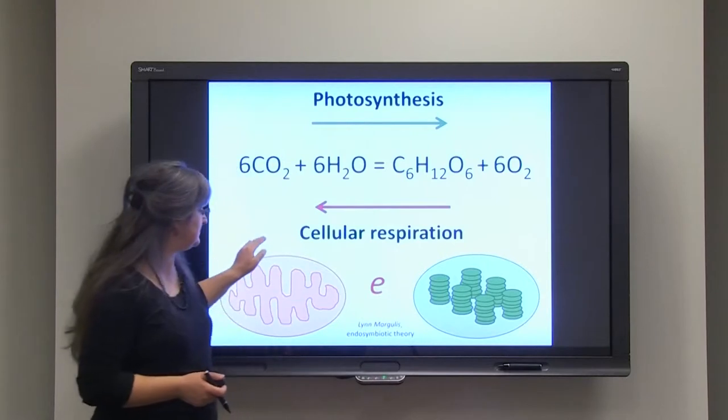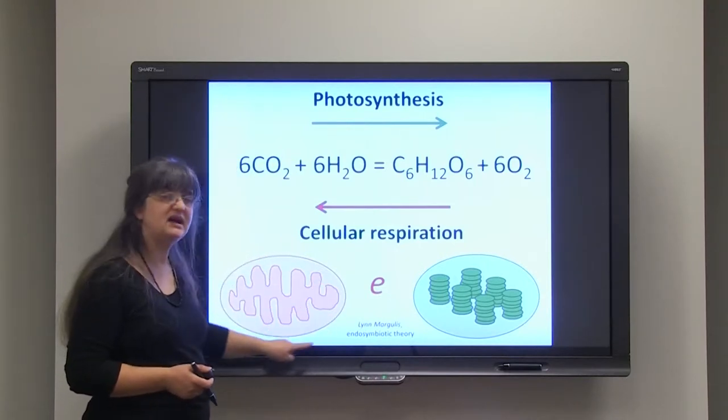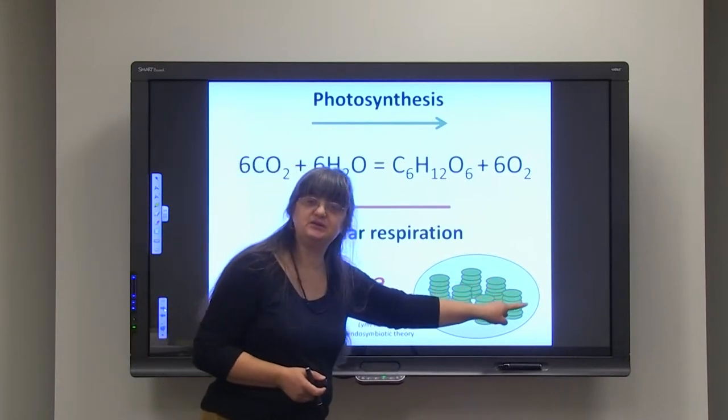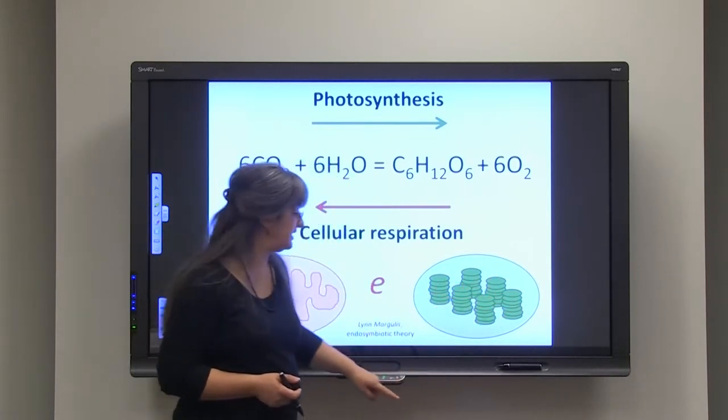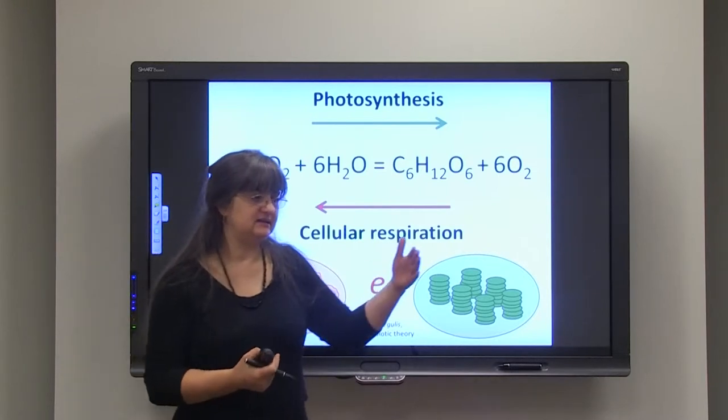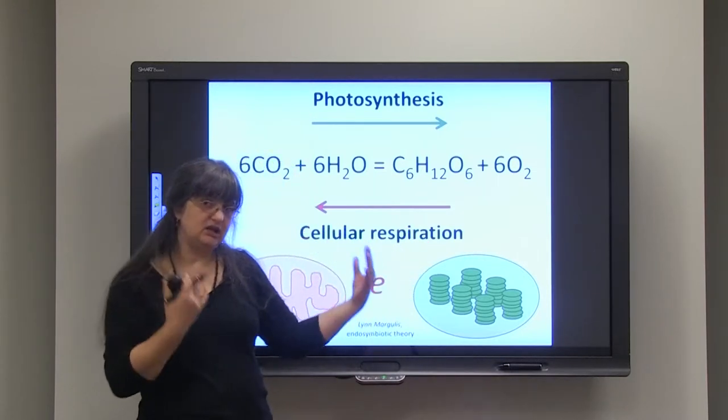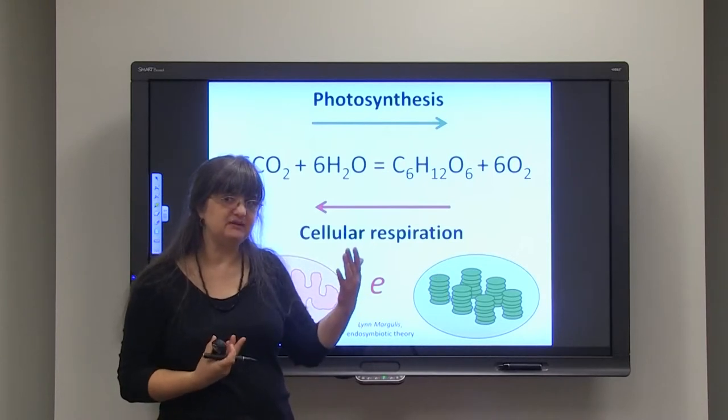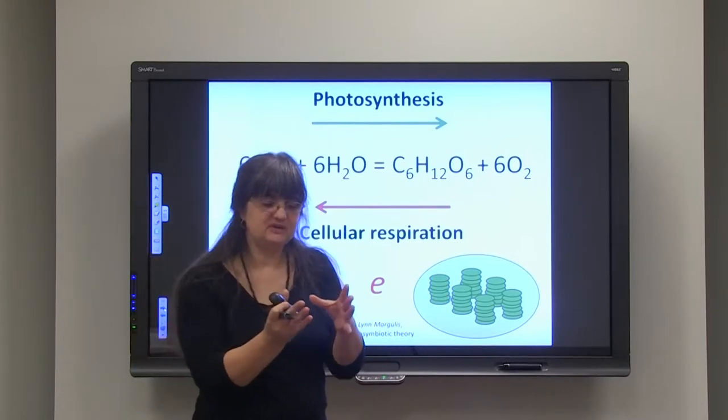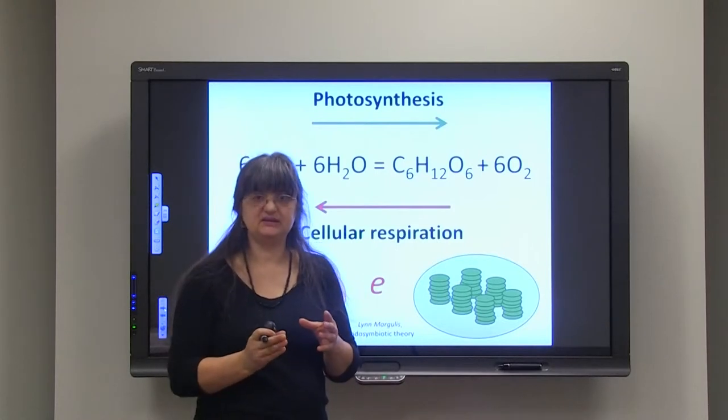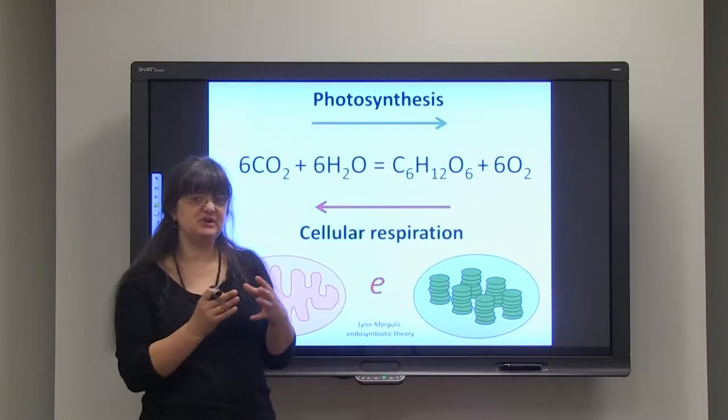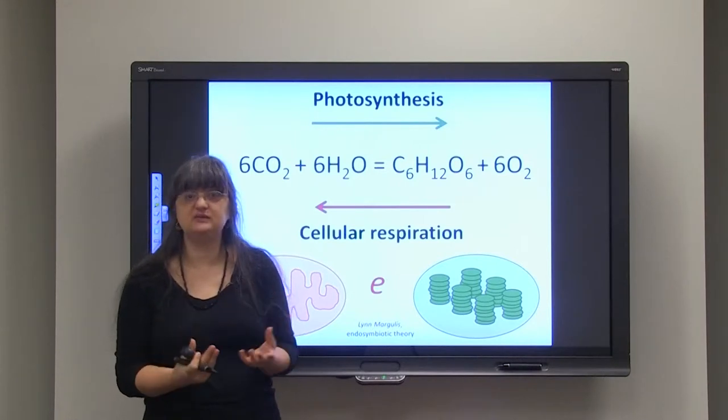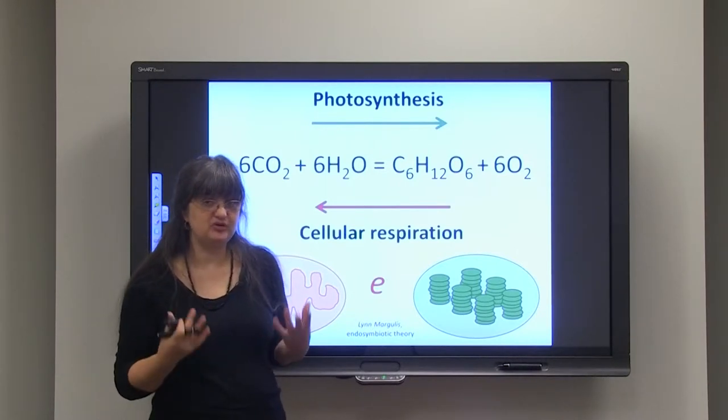So, both chloroplasts and mitochondria have the outside membrane, very important to remember, and have inner membrane. Lynn concluded that what happened is that long time ago, when the life began, small prokaryote organisms made a symbiotic relationship with some of the eukaryotes, and it turns out to be a really good and productive combination.